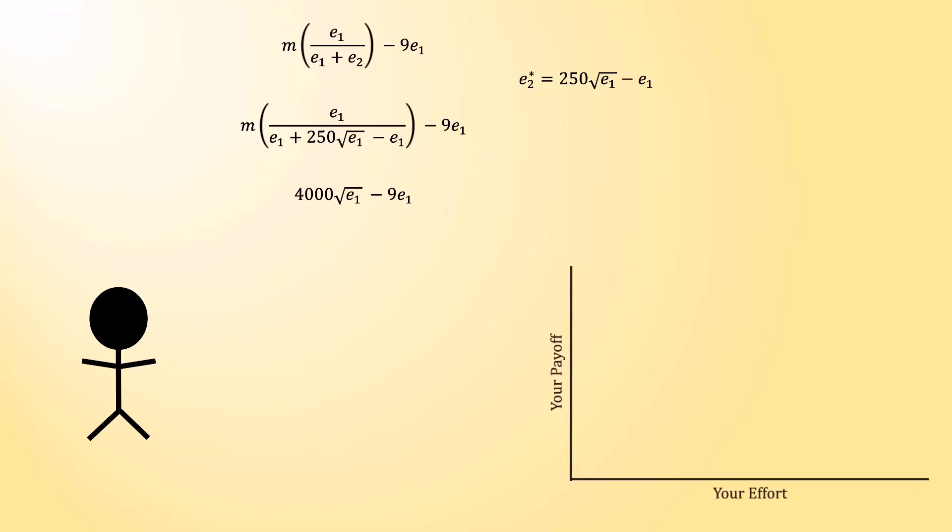To visualize what that looks like, again we have an effort level on the horizontal axis, and a payoff on the vertical axis. We see a similar sort of relationship. Where if you produce no effort, you get nothing. If you produce some effort, you start getting something. But if you produce too much effort, eventually your payoff will go negative.